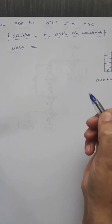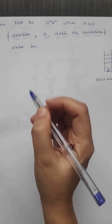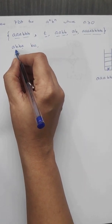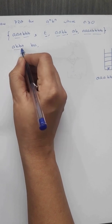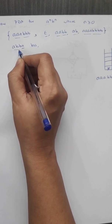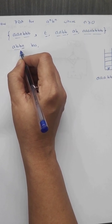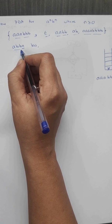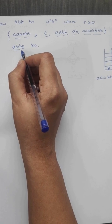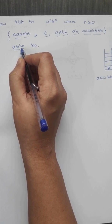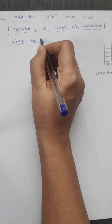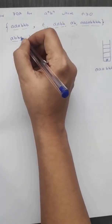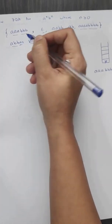What are the invalid strings? We have 'ab' followed by 'ba' — though this string contains equal number of a's and b's, it is not a^n b^n because a is not exclusively followed by b. So 'abba' is an invalid string, and 'ba' is also an invalid string.